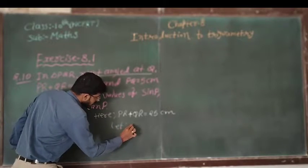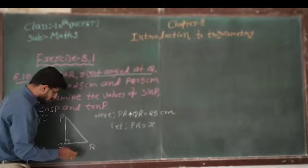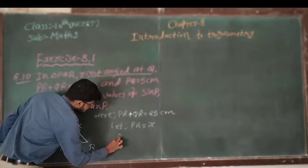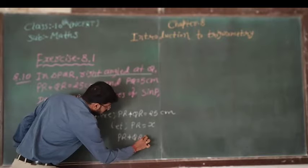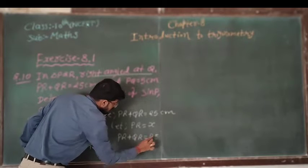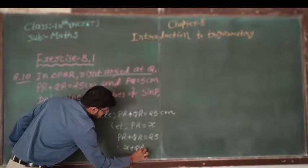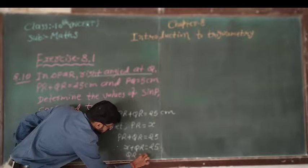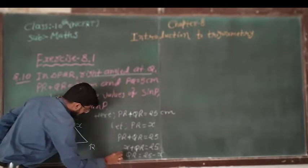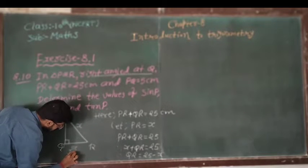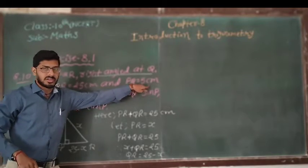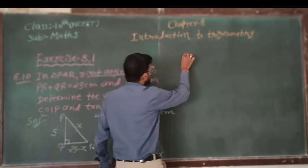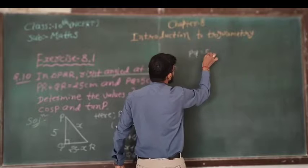Let us suppose PR equal to x. So PR plus QR equal to 25. Therefore, x plus QR equal to 25. Now the value of QR is equal to 25 minus x, and PQ equal to 5 centimeter.